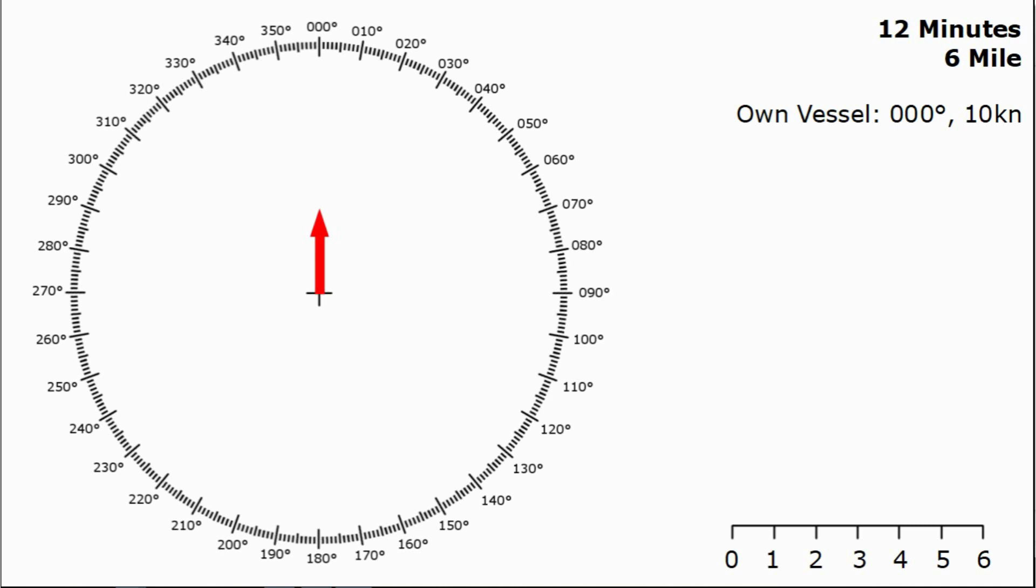Once we got all that information we can begin to plot. When we receive the first echo we can't really tell much, all we've got is a range and bearing. We need to wait for more information. Six minutes later which is half our time period we can complete the second plot. Again we haven't really got much to go on, we still got quite scanty information. Six minutes after the second plot or twelve minutes after the original one we've got our third echo.